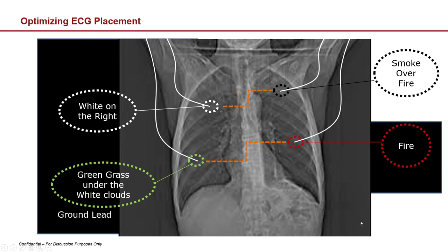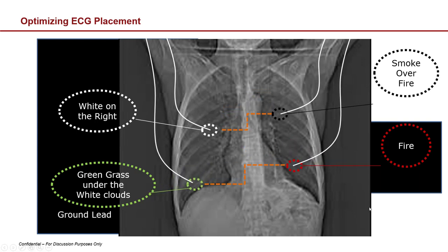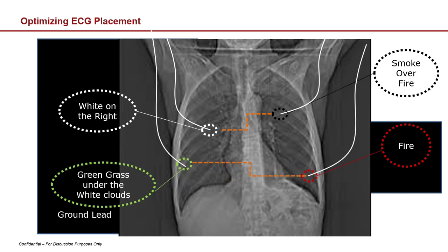It's important to get a good signal. For lead placement: white on the right, black smoke over red fire on the left, and green grass (the ground lead) underneath the white one. Try to triangulate the heart and keep leads offset to reduce beam hardening from metallic clips. If leads don't work, adjust them — the closer to the heart, the better the signal. Never put leads on the stomach; only put on the arm if there's a pacemaker causing interference.